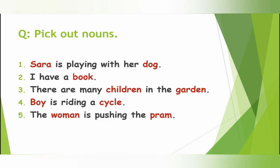Boy is riding a cycle. Look at the word riding — is riding showing the name of anyone? No, riding is not showing the name of anyone. So riding is not a naming word. Boy is the name of a person and cycle is the name of a thing. Boy and cycle are nouns. Next: The woman is pushing the pram. Woman is the name of a person and pram is the name of a thing. Woman and pram are nouns.